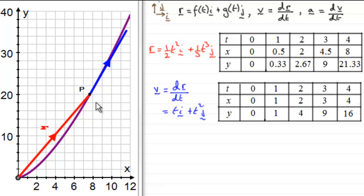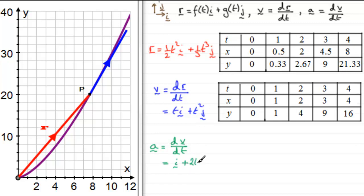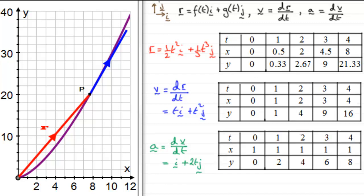Now let's work out the acceleration a of particle P at any time t. We differentiate the velocity with respect to time. If velocity is ti + t²j, then acceleration a equals dv/dt. Differentiating the i component: differentiating t gives simply i. Differentiating t squared gives 2t in the j direction. So a equals i + 2tj. We can again create a table for values of t from 0 to 4.